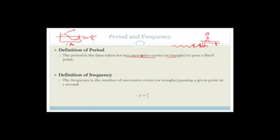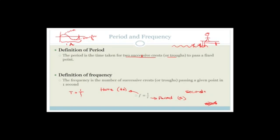The frequency is how many successive crests pass a given point in one second. Frequency is measured in Hertz, symbol Hz. The period T is measured in seconds, symbol S. Remember the lame teacher joke: there's no six in science — so if unsure, write out the whole word 'seconds.' Frequency equals one over period, and period equals one over frequency.